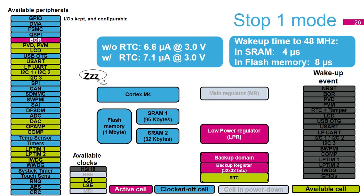Stop 1 mode is very similar to stop 0, except that the power figures are much lower, as the main regulator is stopped and replaced by the low-power regulator. The stop 1 mode consumption without RTC is 6.6 microamps typical at 3 volts. The wake-up time is 4 microseconds when the system clock at wake-up is MSI at 48 MHz and the code is executed from SRAM.